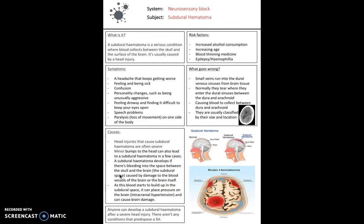Next, we have subdural hematoma — an injury to the bridging vein causing blood accumulation between the dura mater and the arachnoid mater. Diagnosis can be made using an MRI scan, though some doctors also use a CT to check for a skull fracture, which is a common cause. Symptoms include a worsening headache, feeling or being sick, and confusion with personality changes, which are common.